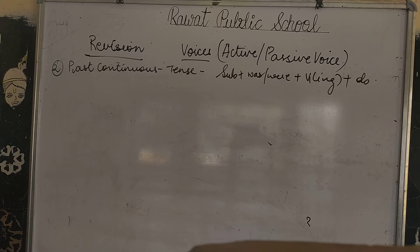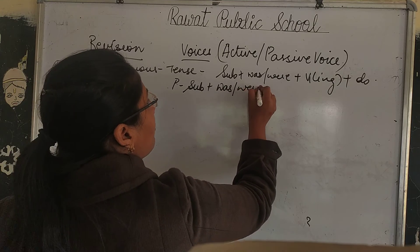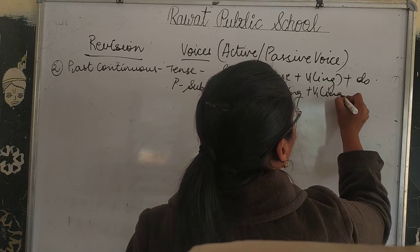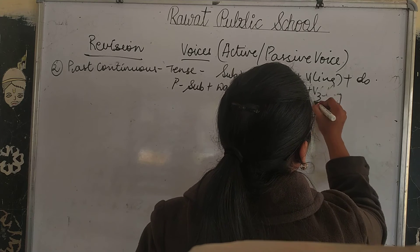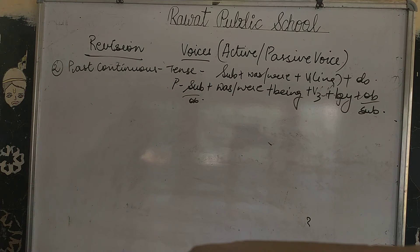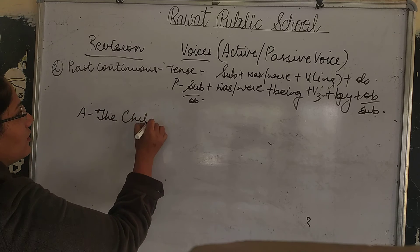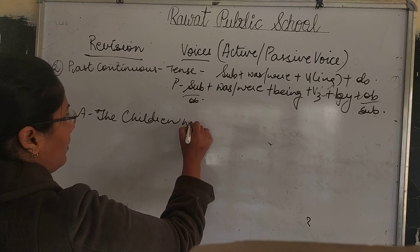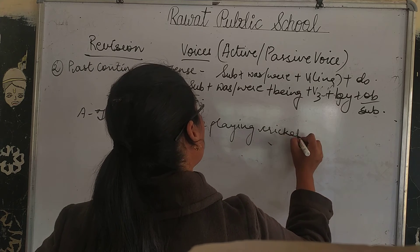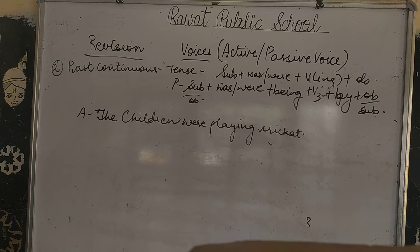Now when we change past continuous active to passive: the subject changes, 'was/were' remains the same, 'being' is added, then verb third form is used (removing the '-ing' form), then 'by', and the object becomes your subject. For example: 'The children were playing cricket.'